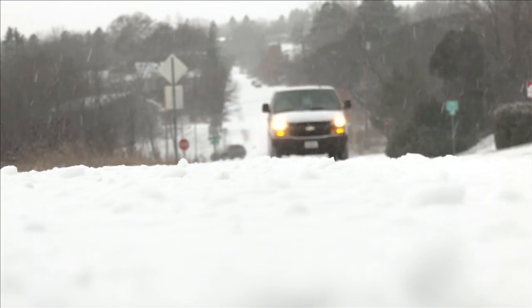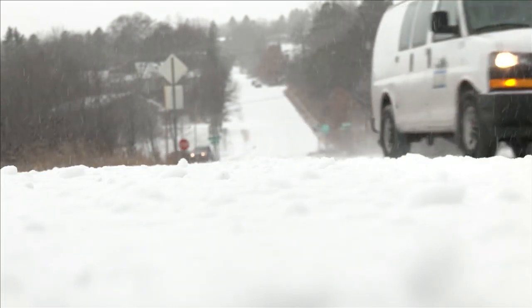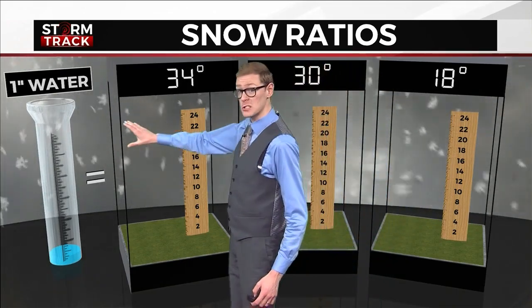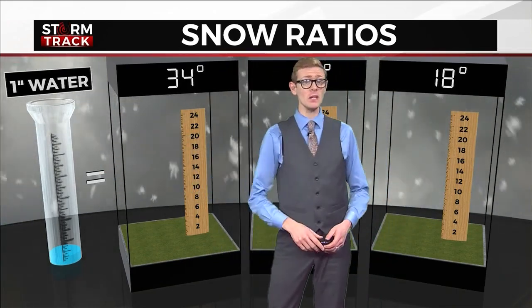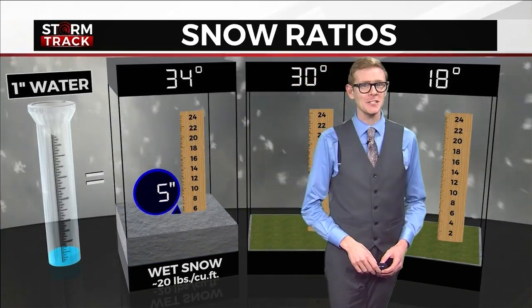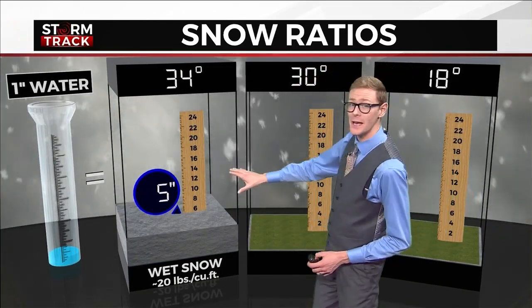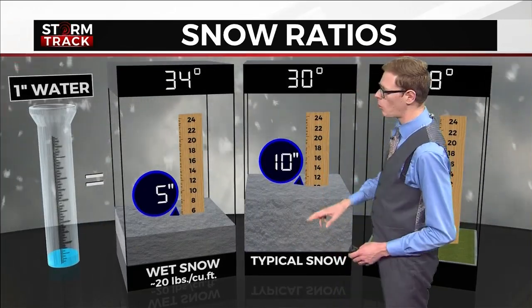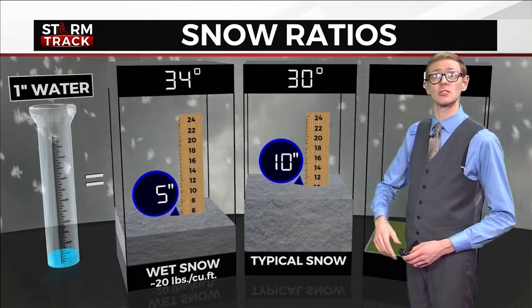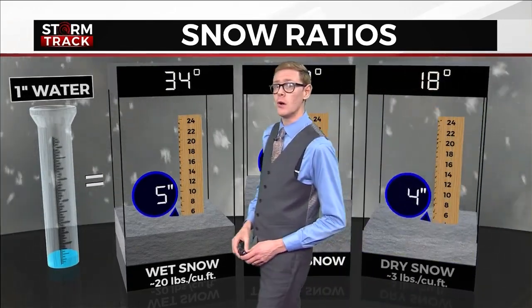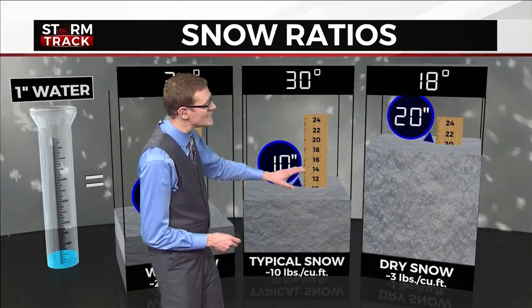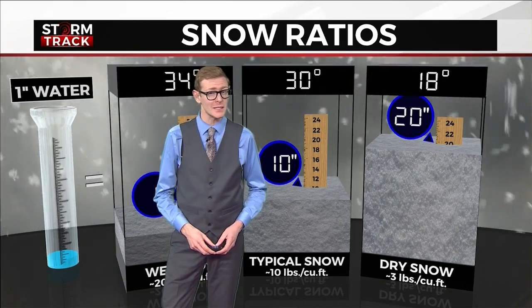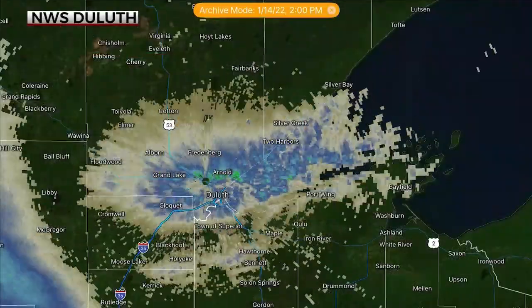Temperatures also play a key role in determining how much snow we get. The snow ratio is the amount of snow that falls from one inch of water. With temperatures near freezing, one inch of liquid precipitation is five inches of wet, heavy snow. An average snow ratio is about 10 to one. But when we get cold air and dry snow, we can end up with a whopping 20 inches for the same amount of moisture. In extreme cases, we can get a lot more than that.